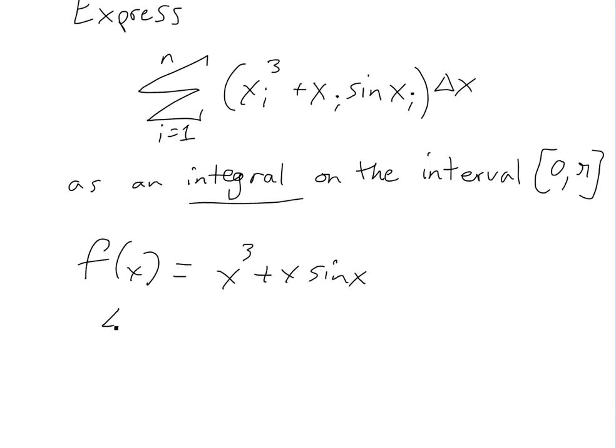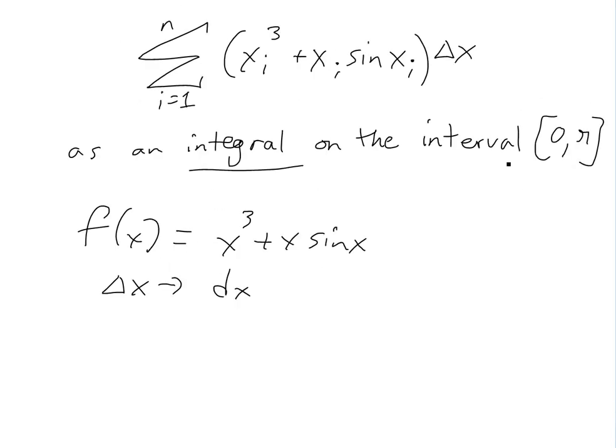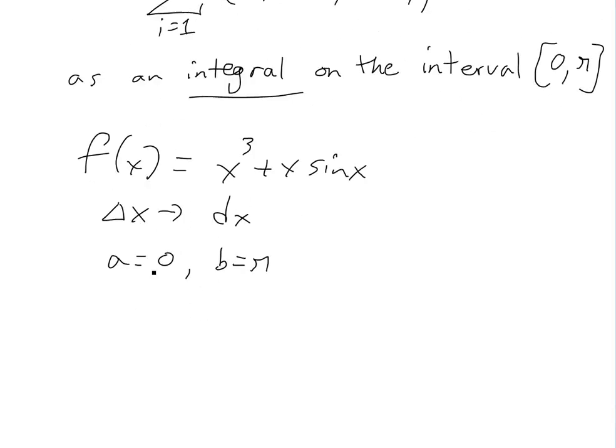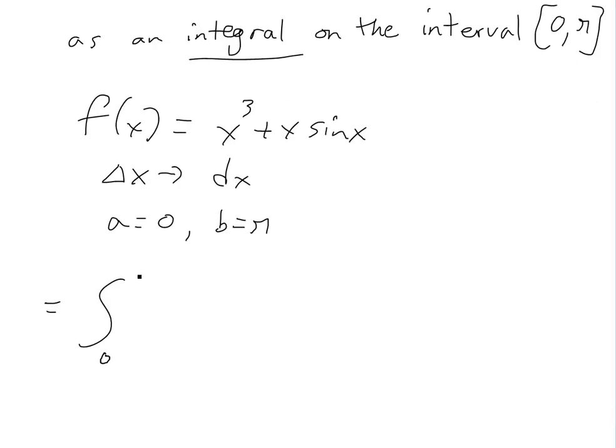and we could just change the delta x into a dx, and we are given the upper and lower limits, this one here, so basically, a is equal to 0, and b is equal to π, here. So then, this would just equal to, we'll just write it down, just write it as an integral of, from 0 to π, f(x) is gonna be this one here, x^3 + x sin(x), and then dx.